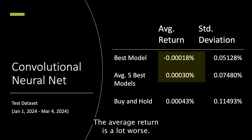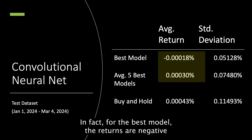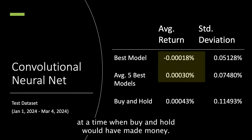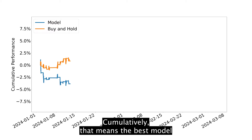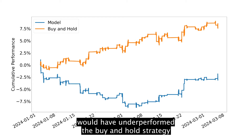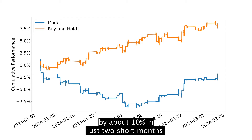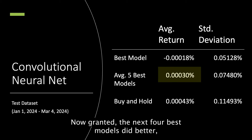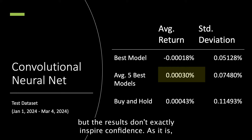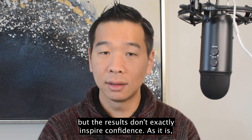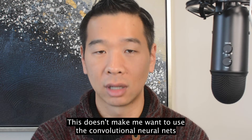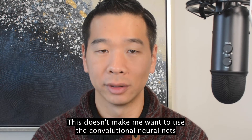The average return is a lot worse. In fact, for the best model, the returns are negative at a time when buy-and-hold would have made money. Cumulatively, the best model would have underperformed the buy-and-hold strategy by about 10% in just two short months. The next four best models did better, but the results don't exactly inspire confidence. As it is, this doesn't make me want to use the convolutional neural nets to trade.